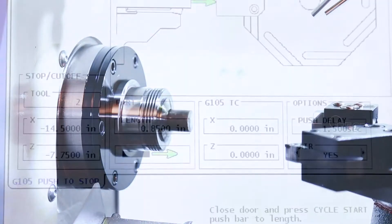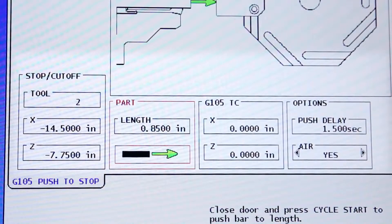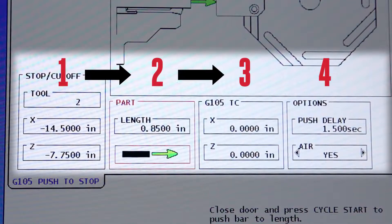We load up a bar and fill in our part information on the control's bar feeder page, working left to right: one, two, three, four.